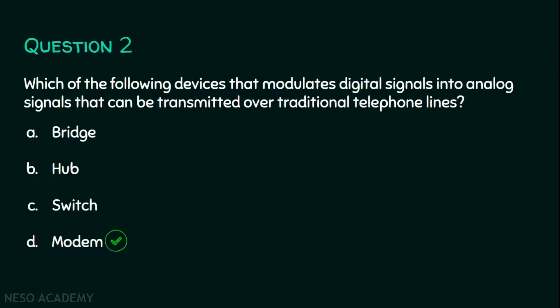Modem can modulate and demodulate. In a traditional landline phone, we can send our digital information over the analog carrier signal from the sending side. On the receiving side, it demodulates — it takes the transmitted data from the analog carrier signal. We will move on to question number three now.